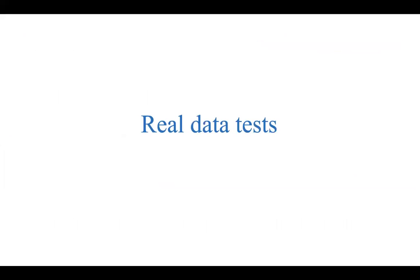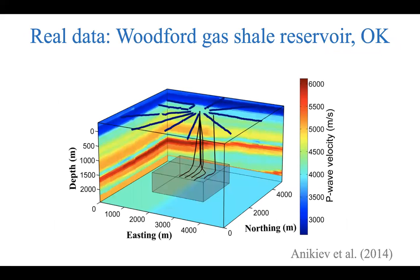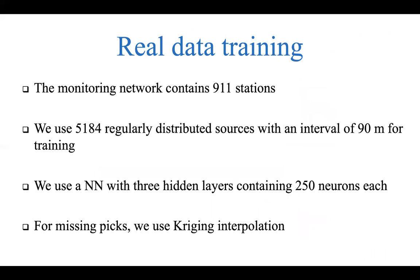Now we test how the method performs on real data from the Woodford Gas Shale reservoir in Oklahoma. The monitoring network shown in blue contains 911 stations, alongside well locations, within a 3D seismicity zone of interest. We build our neural network solution using synthetic data from within that seismicity zone: more than 5,000 regularly distributed sources at 90-meter intervals, totaling 5,184 sources. Travel times are computed at all 911 stations using the EIKONAL solver to train the neural network.